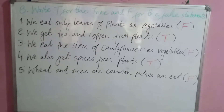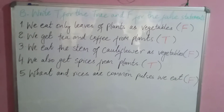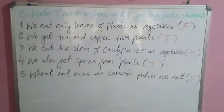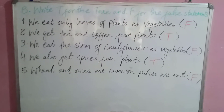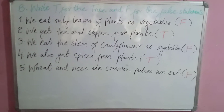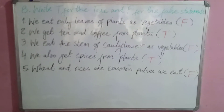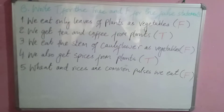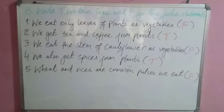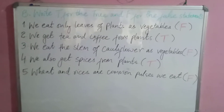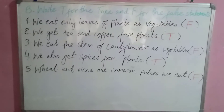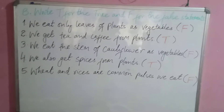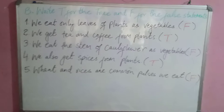Now let's begin with question part B: write T for true and F for false. Question number one says we eat only leaves of plants as vegetables — this is a false statement.